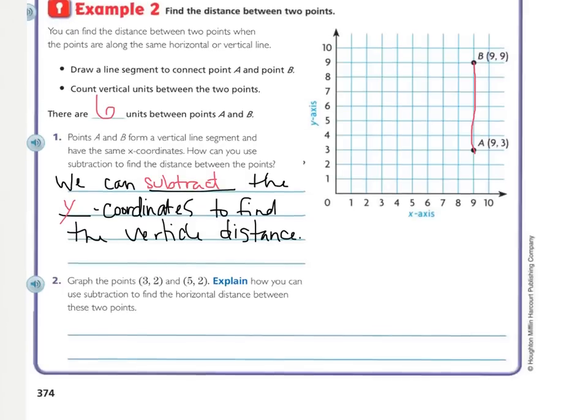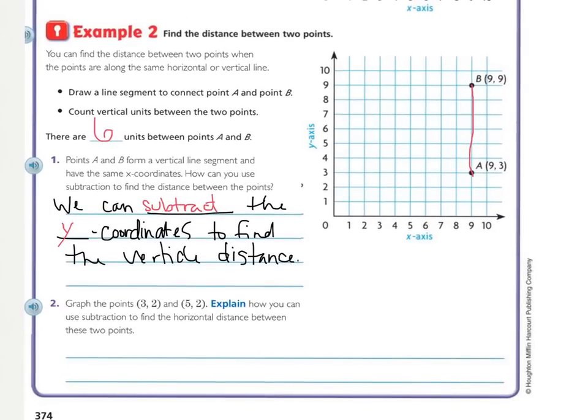Now let's look at number 2. Number 2 tells us to graph the points 3, 2, and 5, 2. Press pause and graph those points. I have graphed my 2 points. I also showed you color coordinates so that you knew which one was which. Right here, I have 3, 2, and right here, I have 5, 2.